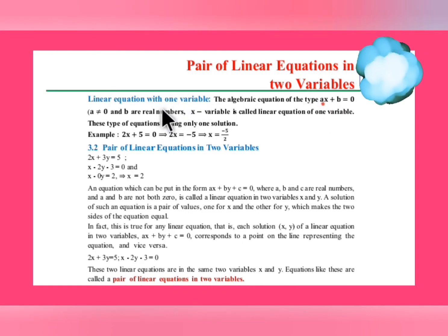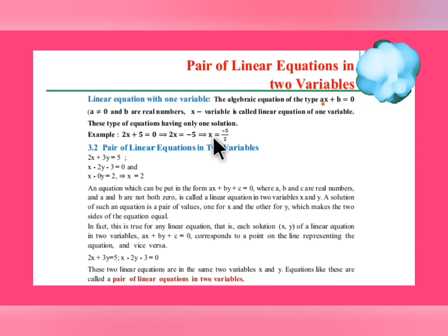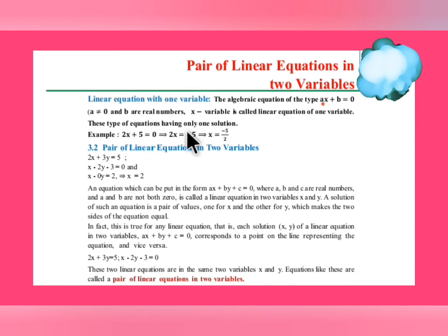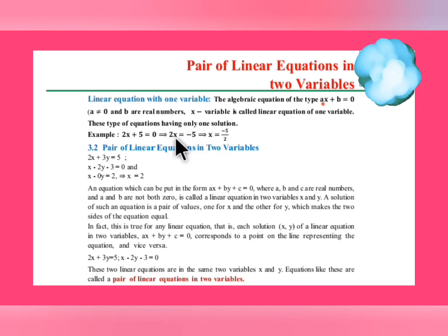This type of equation is called a linear equation with one variable. It means you can find the value of x or y — whatever the given variable is. For example, 2x + 5 = 0: shift the 5 to the other side, it becomes minus 5, so 2x = −5, and x = −5/2.